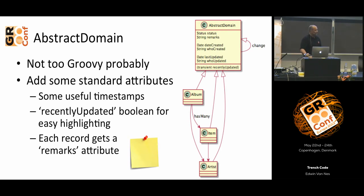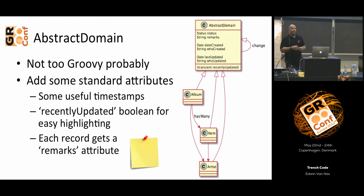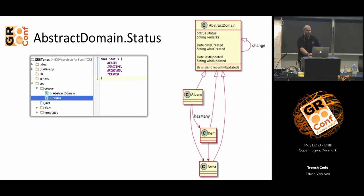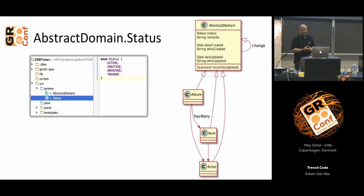Put in some attributes. A nice one is a remark attribute — each and every record has a remark. In the backend user interface that our clients will be using, it will typically look like a yellow note, a remark. It's appreciated a lot. Same goes for status — it's just a straightforward enumeration. We have four kinds of statuses: something is active, records can be inactive, archived (meant to be reused at a later stage), or trashed.